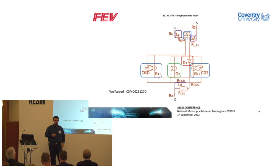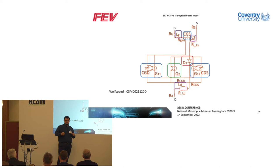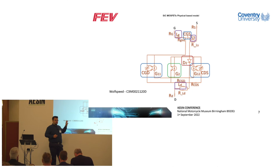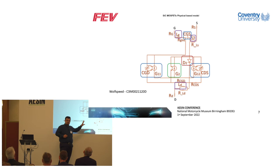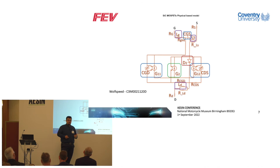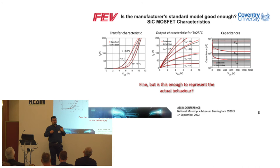How to solve this problem? Luckily, the manufacturer — in this case Wolfspeed — provides us with a model. I took the SPICE model and drew an electric circuit to understand the model provided by the manufacturer, and asked myself if it's good enough. The manufacturer includes two variable capacitances — gate-to-drain and drain-to-source — and a constant gate-to-source capacitance. The channel current is represented as G2, the body diode is included, and finally the internal stray inductance is also given by the manufacturer.